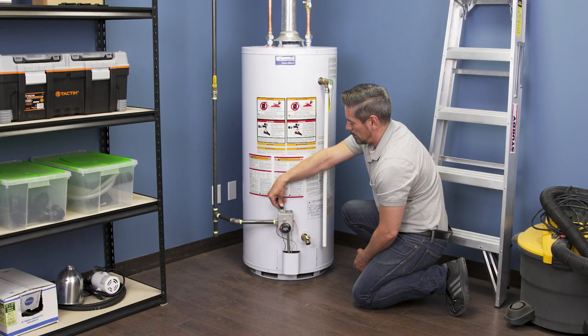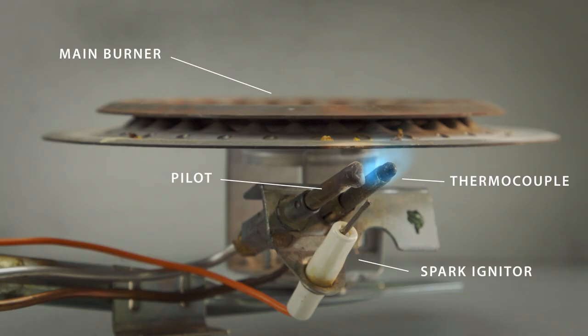Hi, I'm Vance and welcome to Repair and Replace. If the pilot light in your water heater keeps going out or won't stay lit, then it could be a problem with a thermocouple.